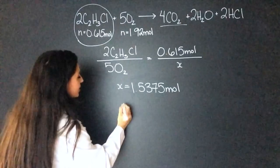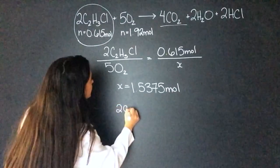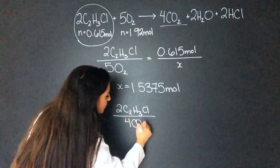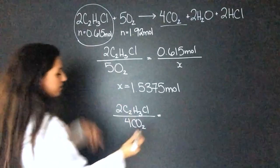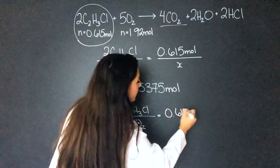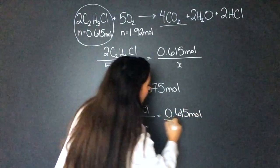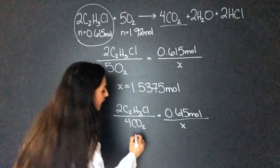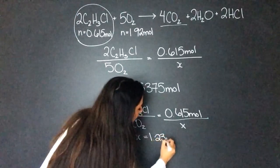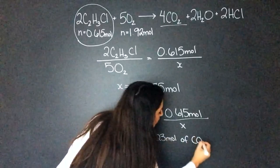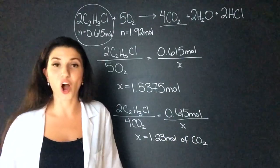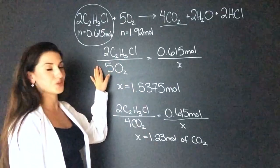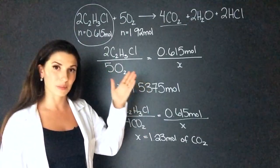So we have 2C2H3Cl compared to four CO2. That will equal, we have 0.615 mole. And we're looking for the moles of CO2. When I cross multiply and divide that, I get 1.23 moles of CO2. And that is method one. I always recommend this for when you have two reactants because you only have to do this step once and you'll know which one is going to be the limiting reactant.